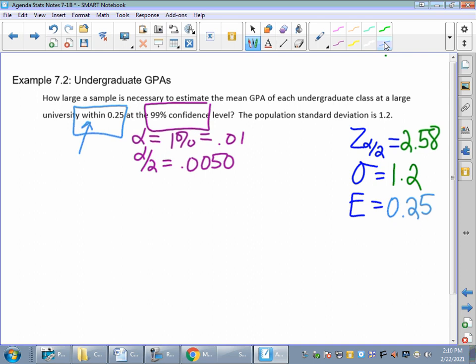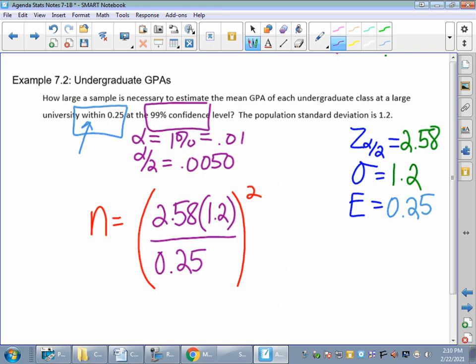So I'm going to go to my formula. N is equal to, remember, it's a giant squared at the end. And I've got my z, so 2.58 times my sigma, which is 1.2, divided by that margin of error.